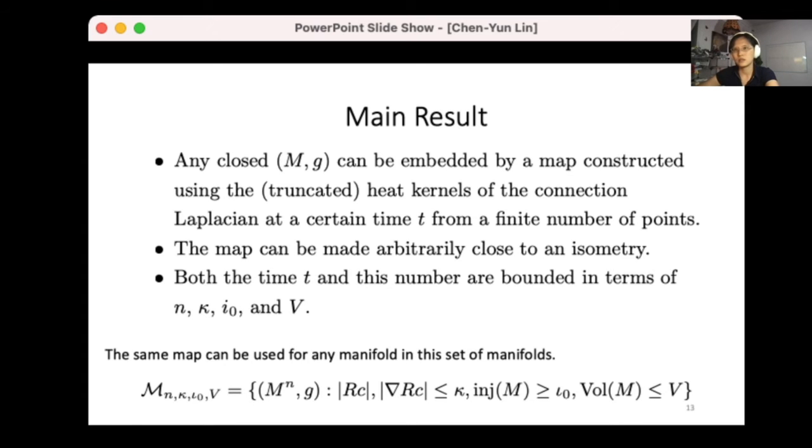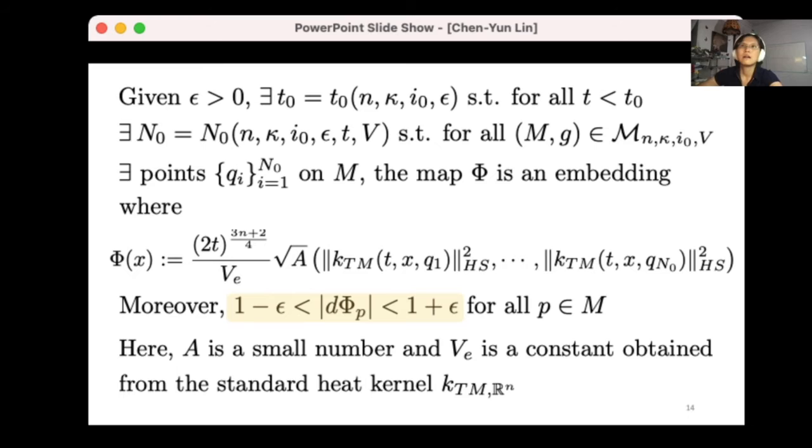So here we go. Given any ε positive, there exists a time t₀ where t₀ only depends on n, κ, injectivity radius lower bound, and ε, so that for any time less than t₀ there exists a number of points n₀, where n₀ only depends on n, κ, injectivity radius lower bound and V, so that any manifold in the manifold set, there exists points q₁ to qₙ₀ so that the map φ is an embedding.